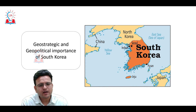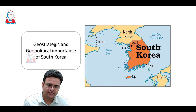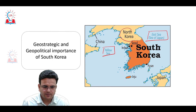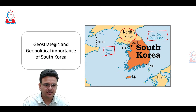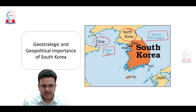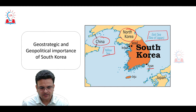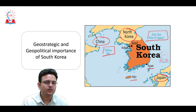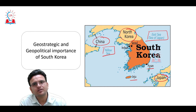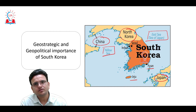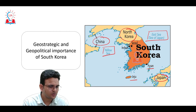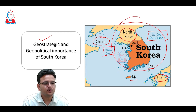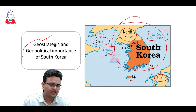Looking at the map, we have the Sea of Japan on one side and the Yellow Sea on the other. North Korea shares a border with China. We can see Busan and Jeju, and Japan is on the other side. Whenever studying international relations, try to note the location of the country, as UPSC prelims asks location-based questions.